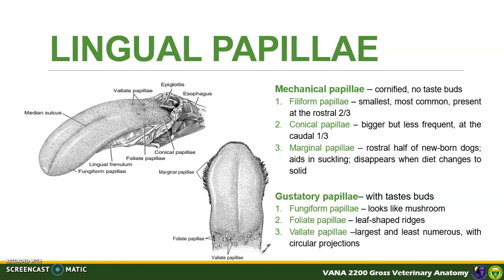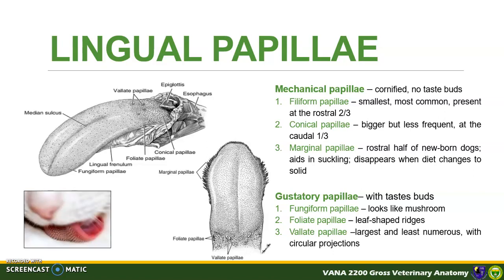Filiform papillae are the smallest and the most numerous. They are located at the rostral two-thirds of the tongue, look like hair, and are long and soft. Conical papillae are bigger but less frequent. They are found at the dorsum of the caudal one-third of the tongue, each standing on a wide circular base with a pointed apex. This is the reason why cats have spike-like structures in their tongue used for grooming. Marginal papillae are present in the rostral half of the tongue of newborn carnivores and piglets that aids in suckling milk. This disappears when the diet changes to solid.